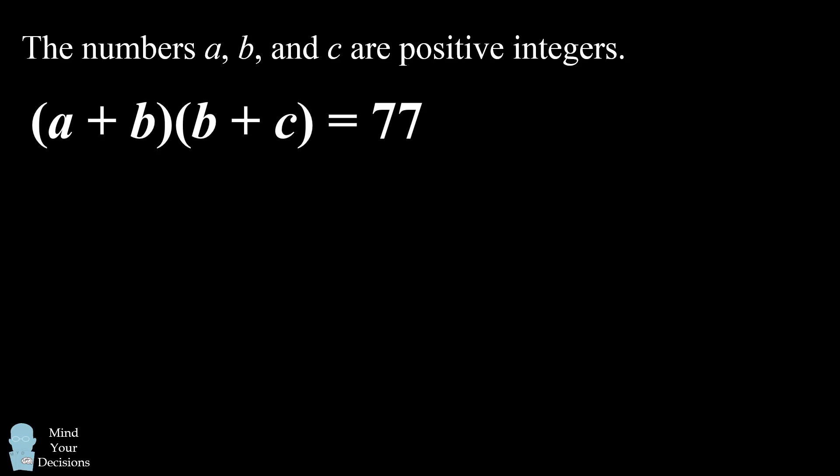Well, there are only a few possibilities. It can either be 1 times 77, or 77 times 1, or it can be 7 times 11, or 11 times 7. Those are the only possibilities because 77 has prime factors of 7 and 11.